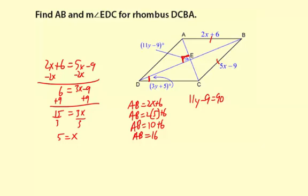I'm just going to say 11y minus 9 equals 90. Add 9 to both sides. 11y equals 99. Divide by 11. Y equals 99 divided by 11, which is 9.